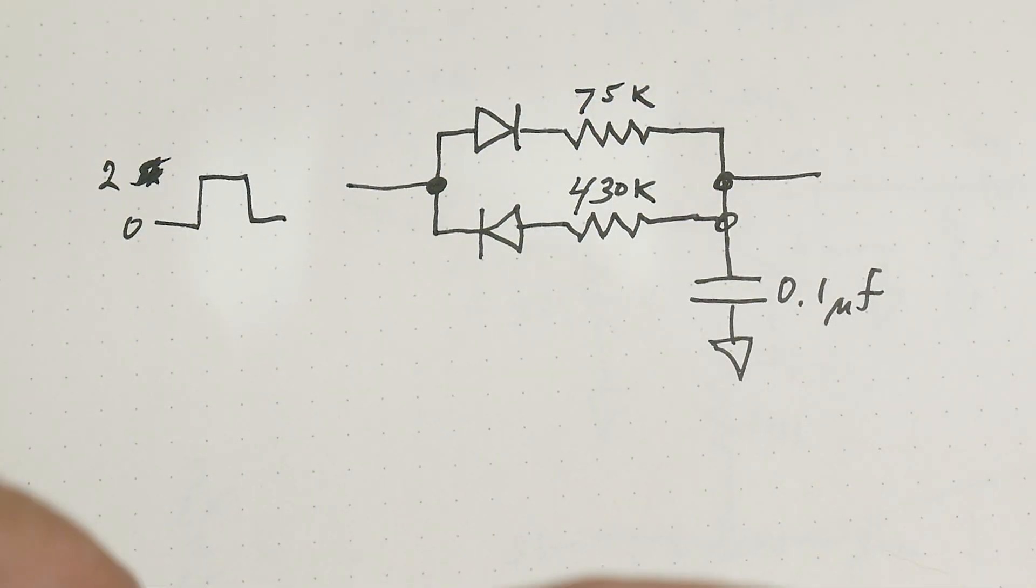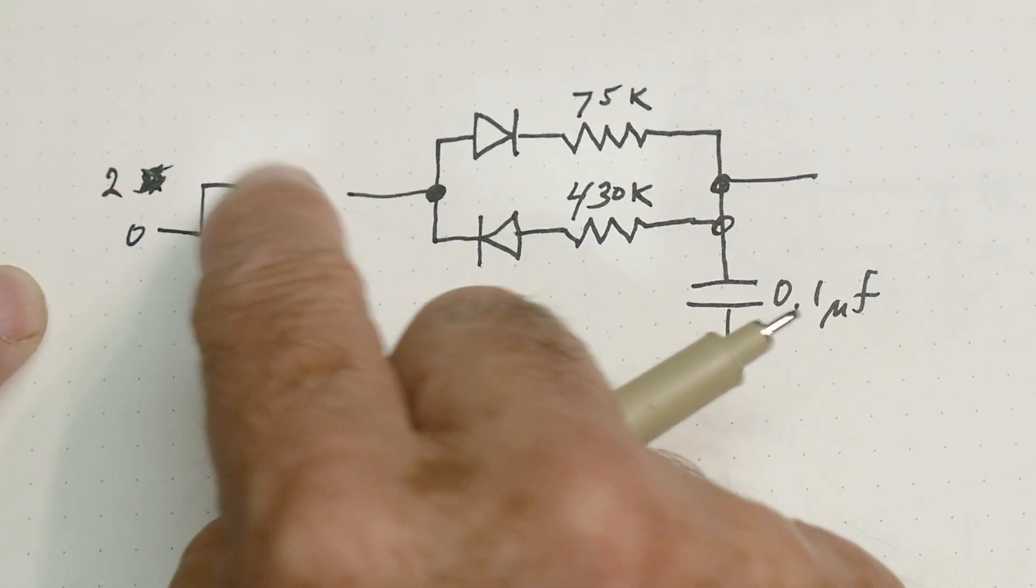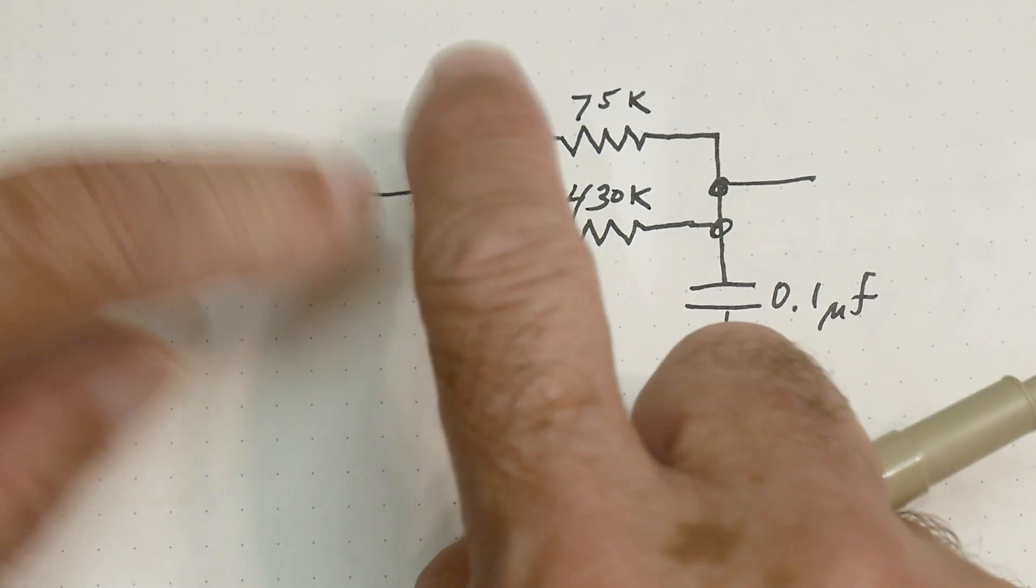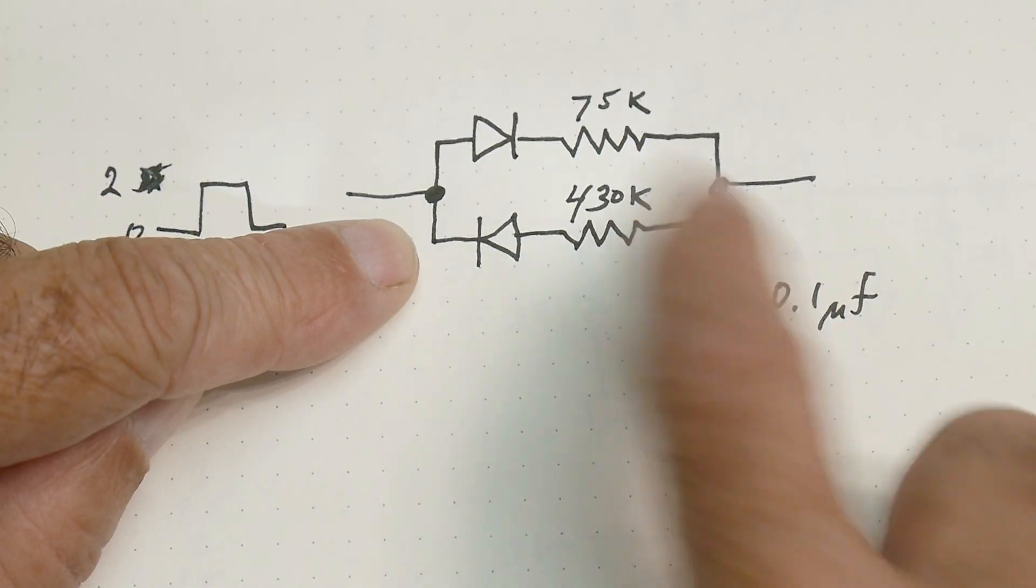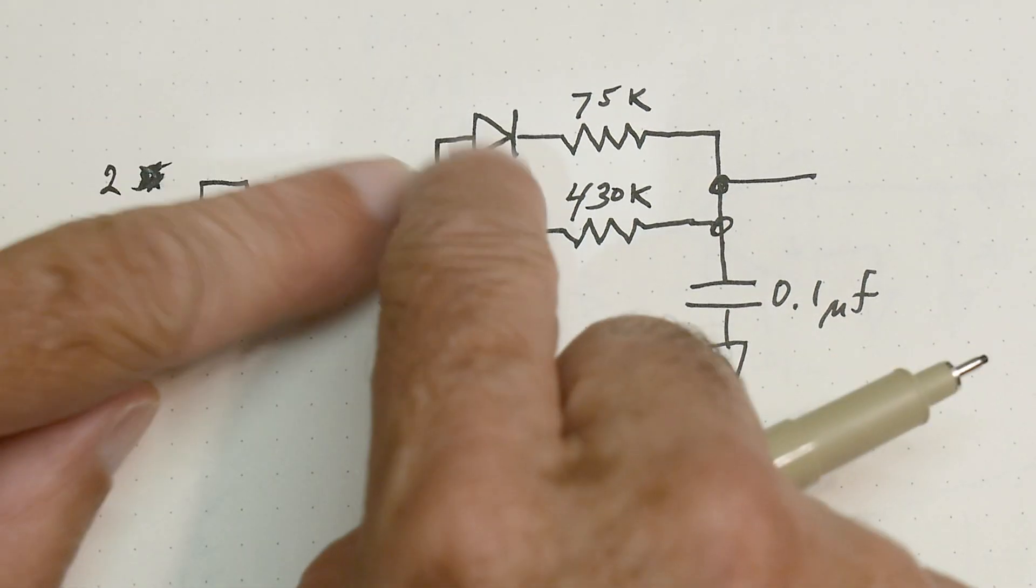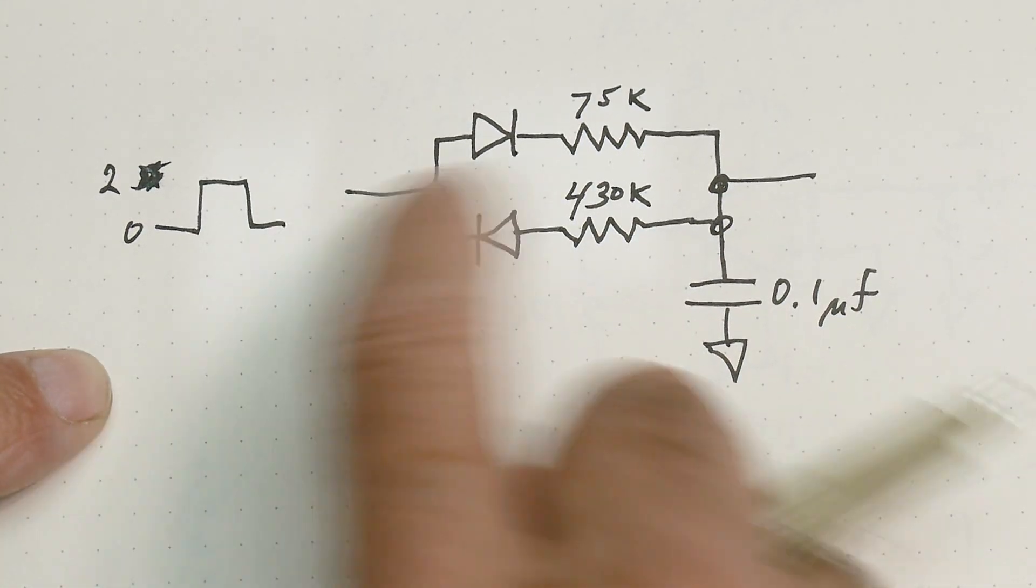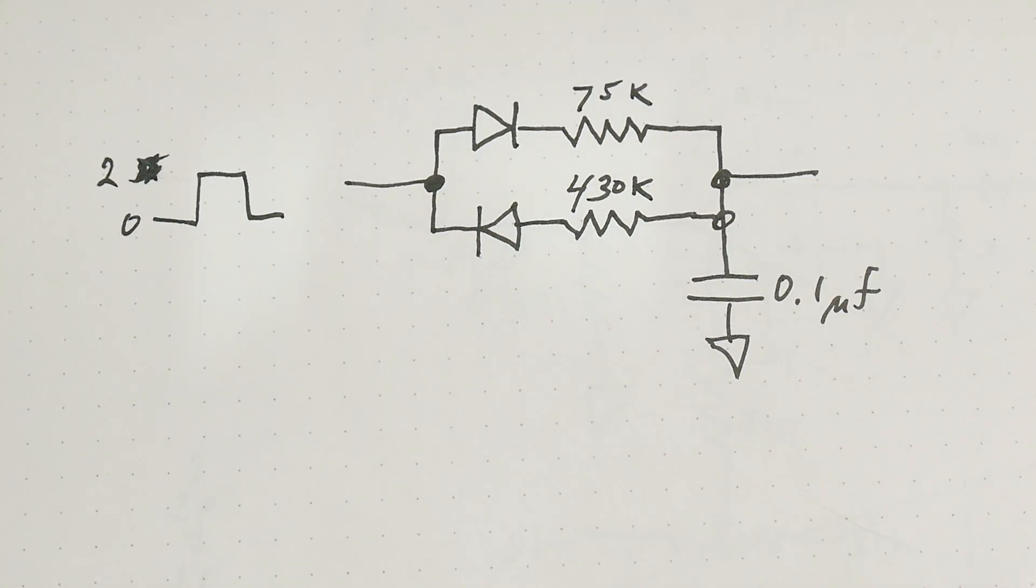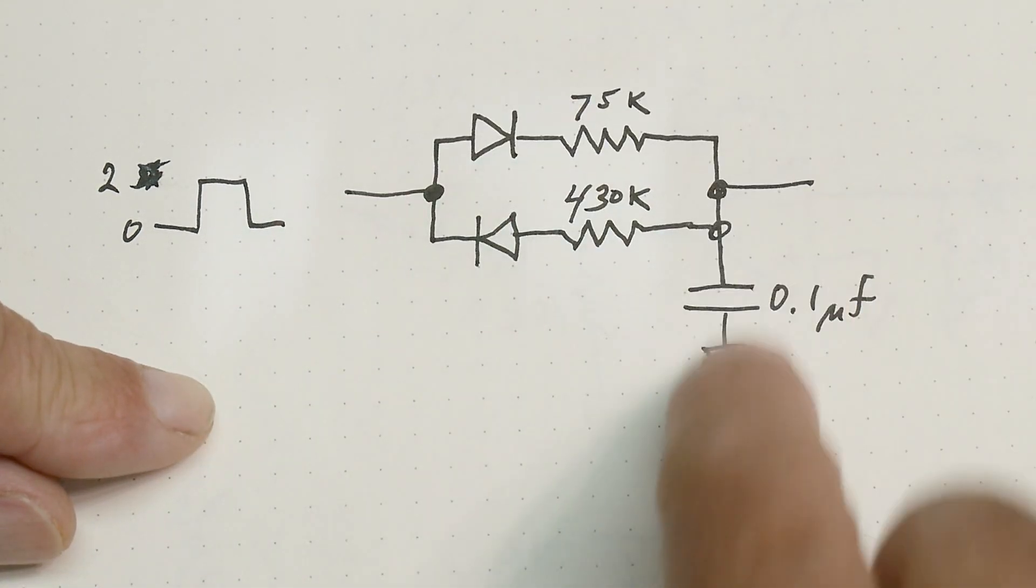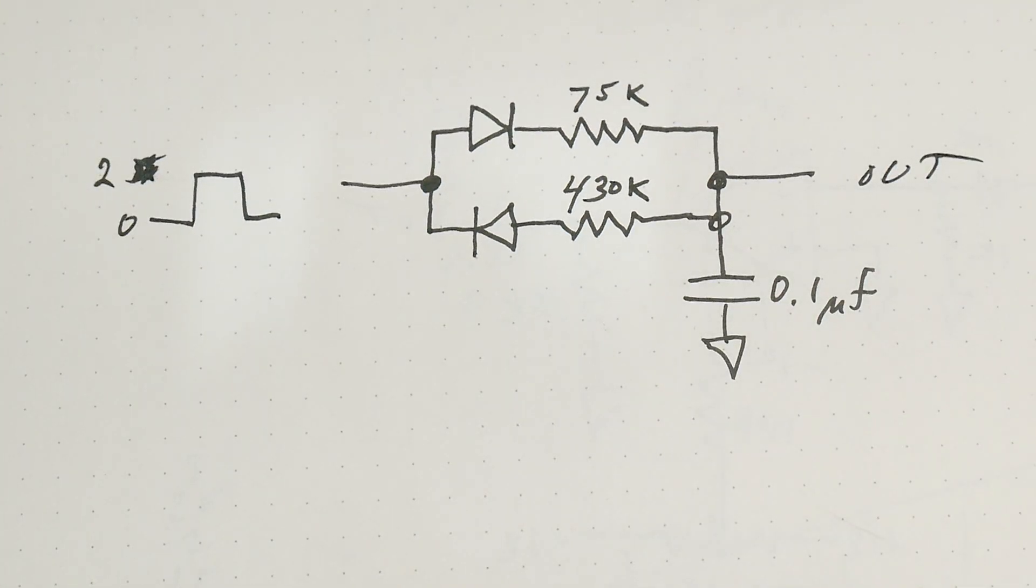This is the circuit that's generating that waveform. We have a zero to two volt rising pulse, and when it's going in the up direction this diode conducts and we're charging the capacitor with 75k. When it goes back down to zero volts then we discharge the capacitor through 430k, so we have a different amount of current in the positive direction and the negative direction - we're charging it faster and discharging it slower.